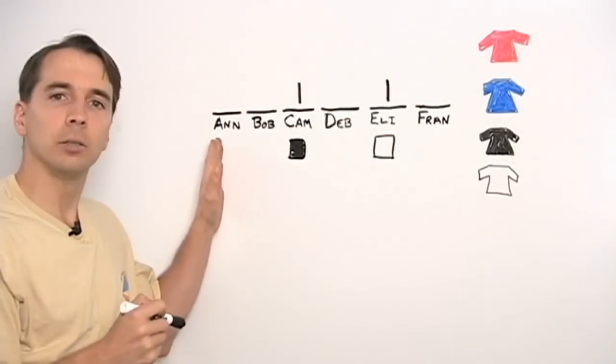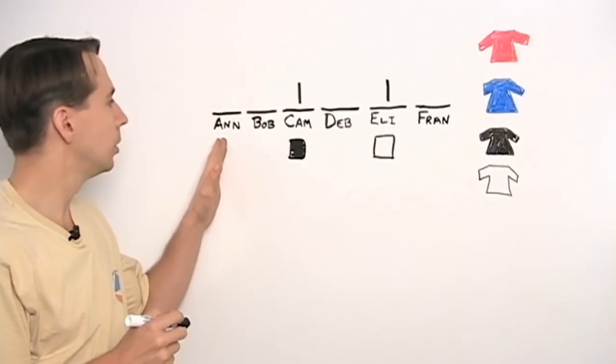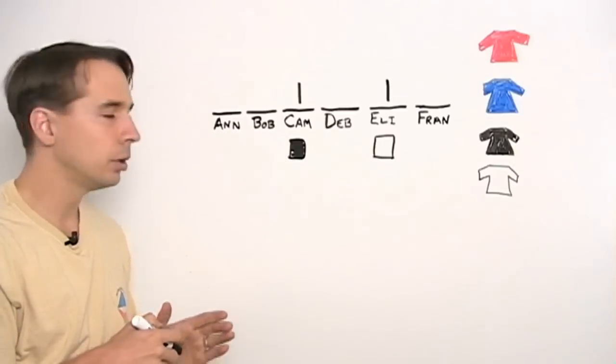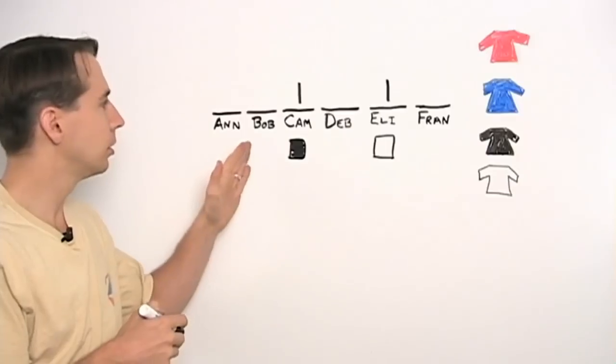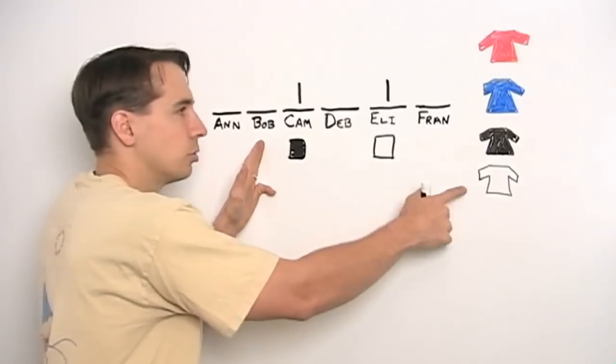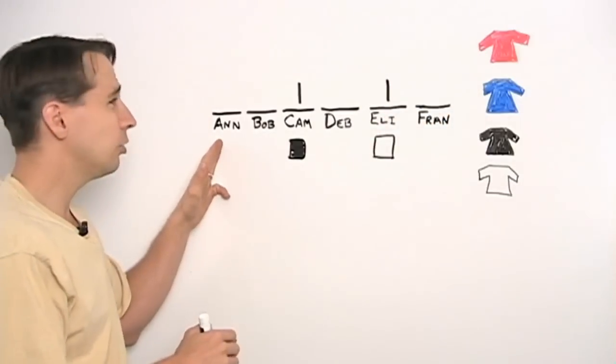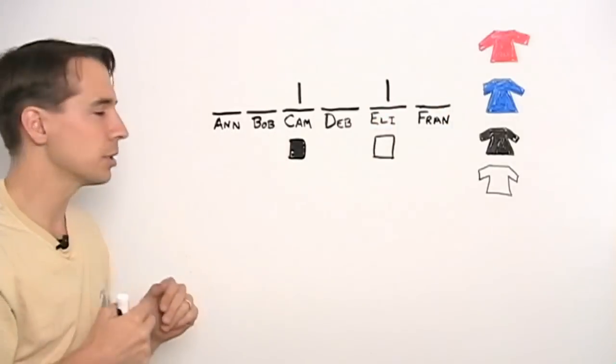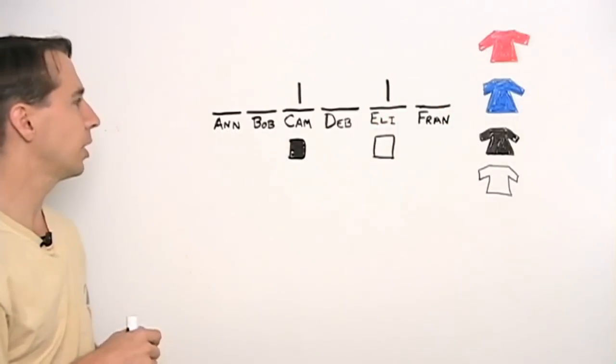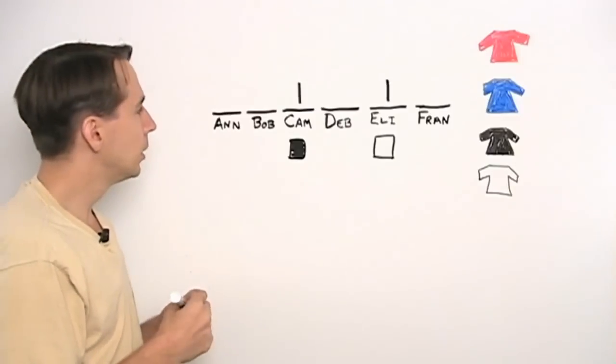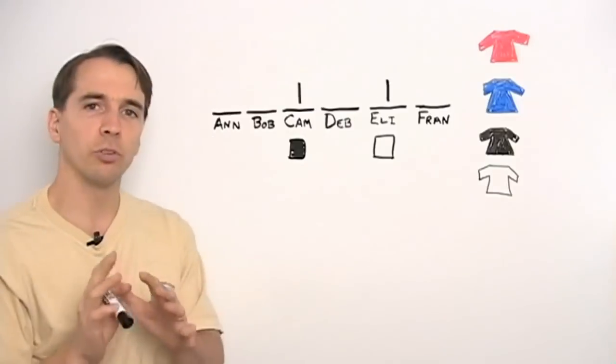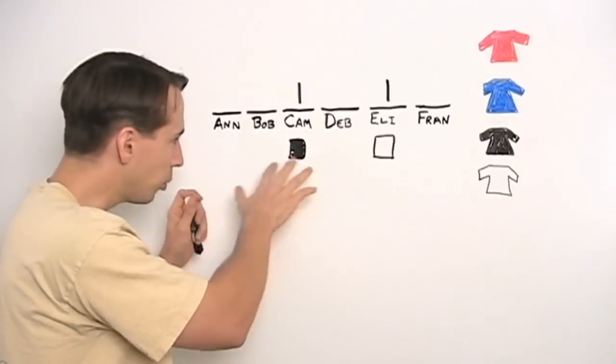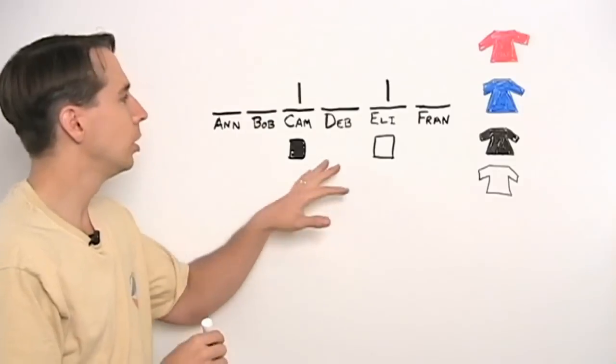But now if we start from the beginning here with Ann, well, it looks like she has four choices. But then how many choices does Bob have? If Ann chooses black, then Bob has three choices. He can choose white, blue, or red. But if Ann chooses something other than black, say she chooses red, well then Bob only has two choices. So if we just start with Ann, then we run into a problem. So instead of starting with Ann, what we're going to do is we're going to start from the most restricted of the cool people.